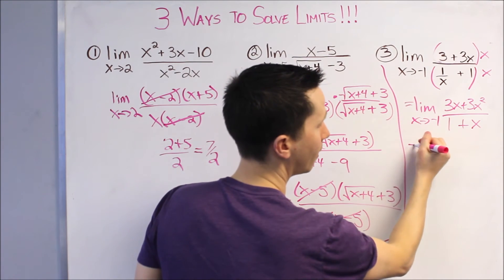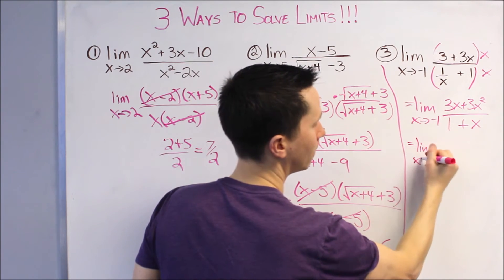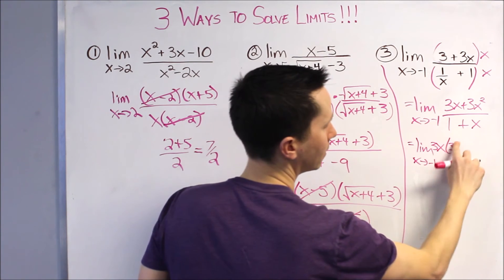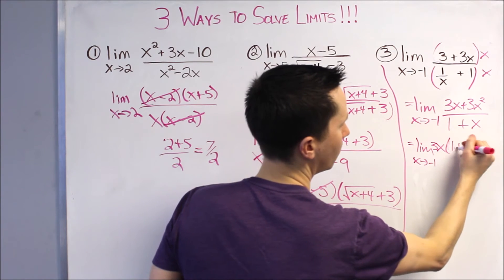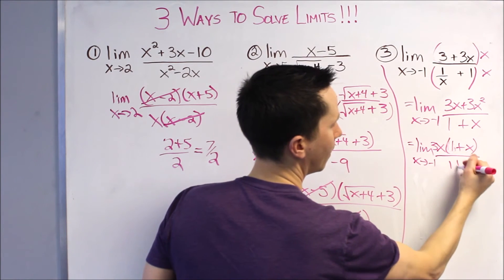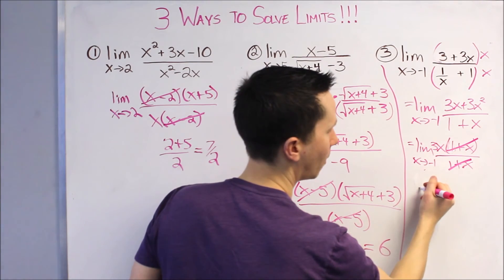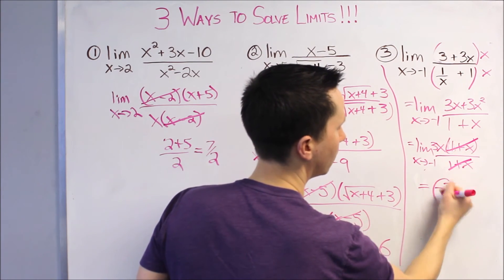But, on the top, we can now factor. We can take out a 3X. And, we're left with 1 plus X. Now, this is going to cancel our problem. Sub in now because the problem's gone, and we get negative 3.